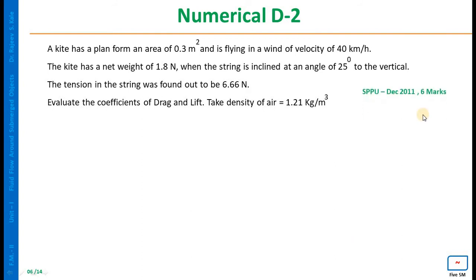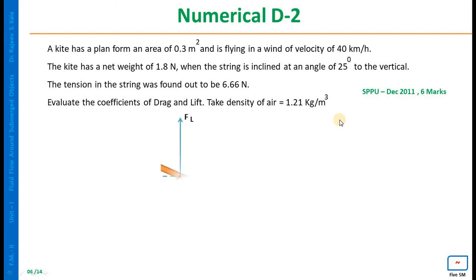Now Numerical 2, from University Examination December 2011, worth 6 marks. A kite has a plan form area of 0.3 m² and is flying in a wind of velocity 40 km/hour. The kite has a net weight of 1.8 N. When the string is inclined at an angle of 25 degrees to the vertical, the tension in the string was found to be 6.66 N. Evaluate the coefficients of drag and lift. Take density of air as 1.21 kg/m³. Draw the neat sketch.